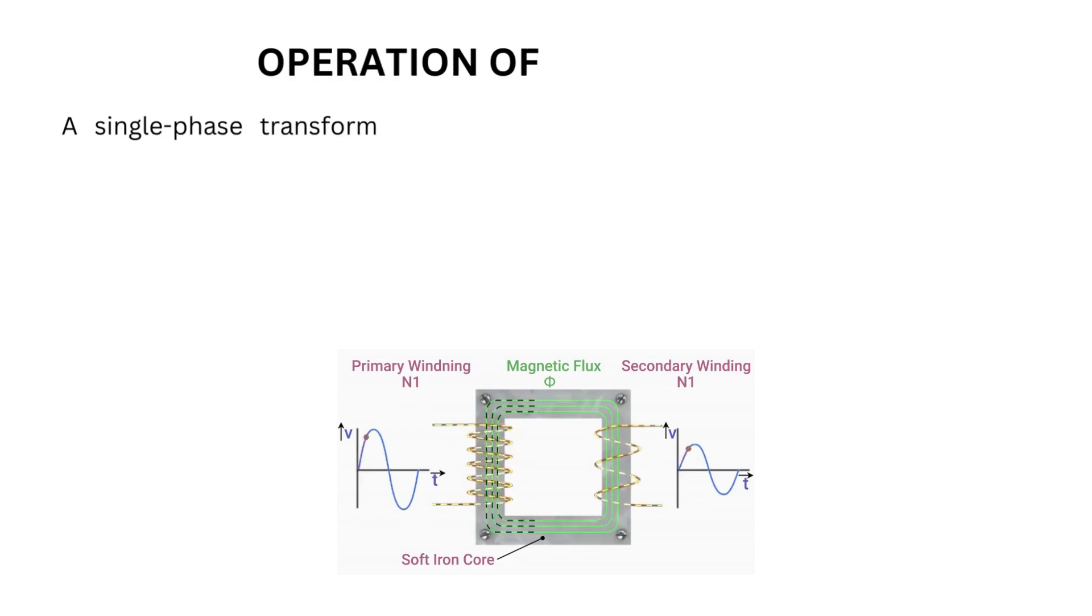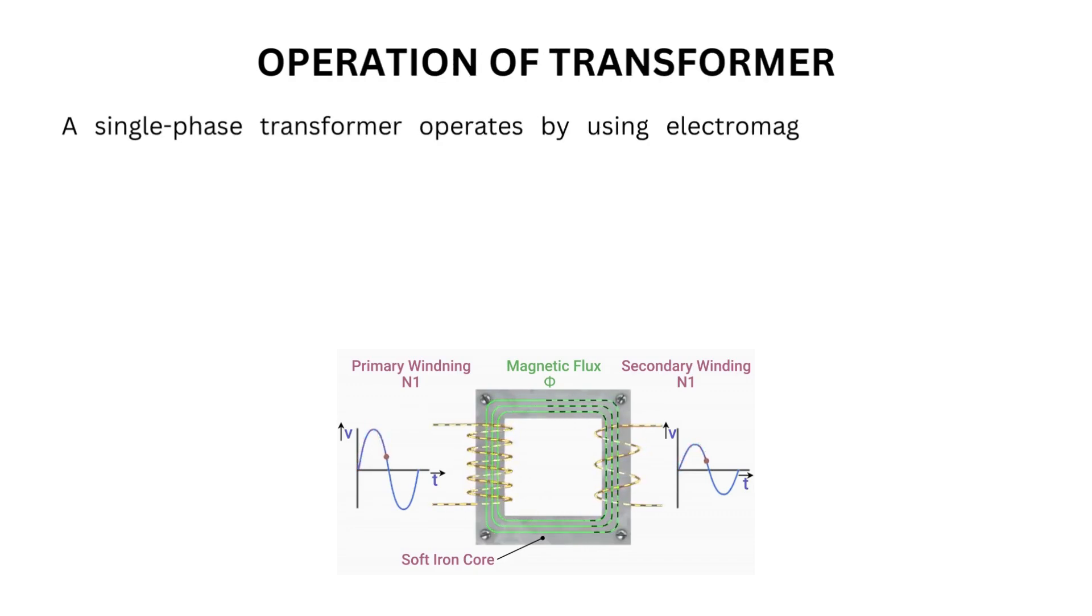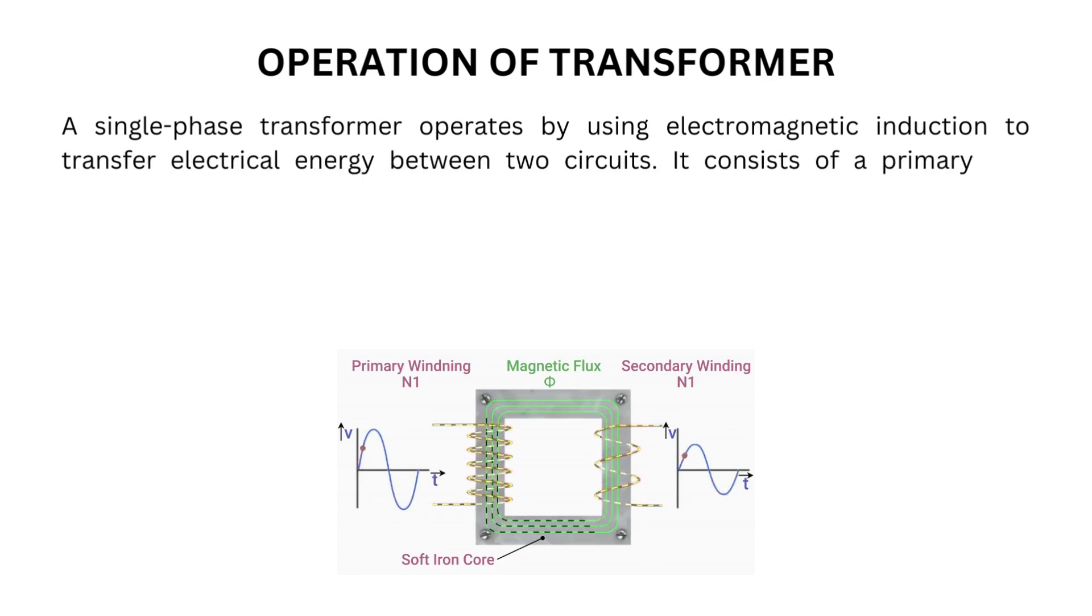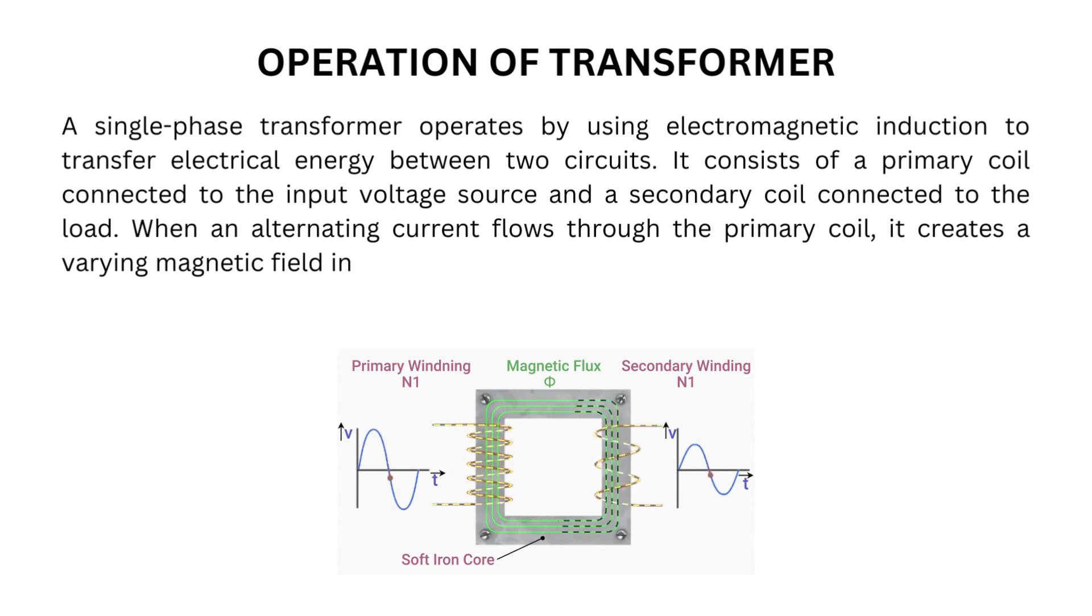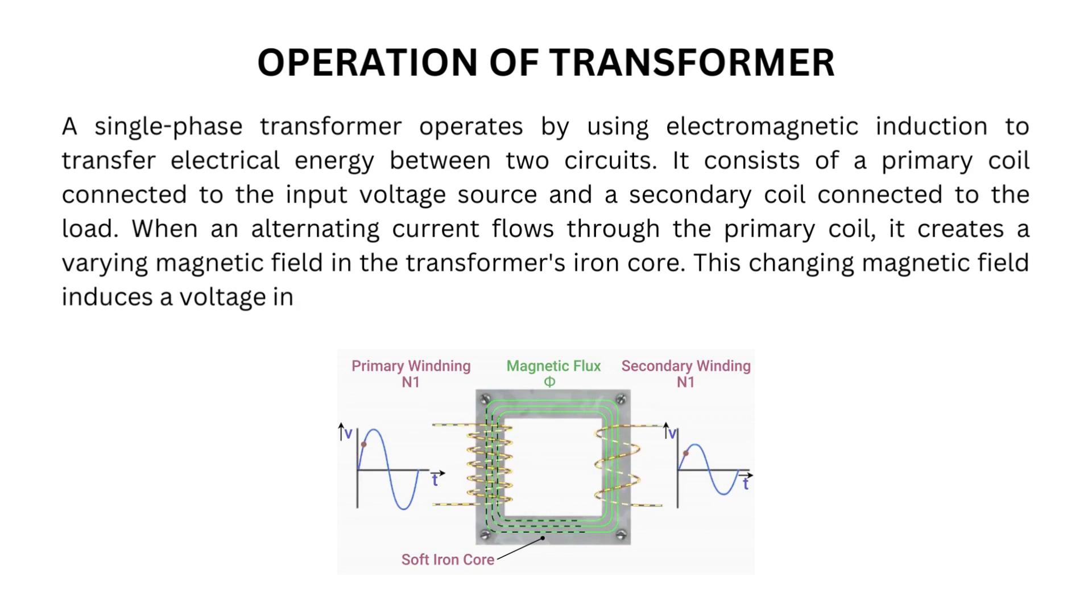A single-phase transformer operates by using electromagnetic induction to transfer electrical energy between two circuits. It consists of a primary coil connected to the input voltage source and a secondary coil connected to the load. When an alternating current flows through the primary coil, it creates a varying magnetic field in the transformer's iron core. This changing magnetic field induces a voltage in the secondary coil, which is then supplied to the load.